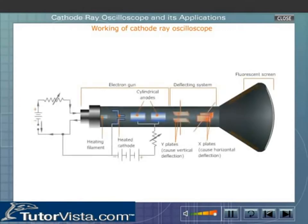The electron gun generates a narrow beam of electrons. The anodes accelerate the electrons. Deflecting coils produce an extremely low frequency electromagnetic field that helps in changing the direction of the electron beam. The electron beam produces a tiny bright visible spot when it strikes the screen. To produce an image on the screen, signals are applied to the deflecting coils and also to the apparatus that controls the intensity of the electron beam.